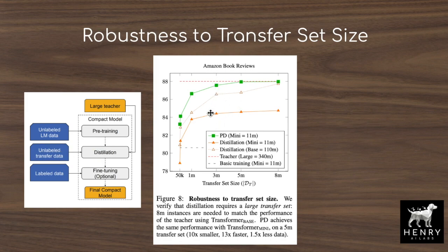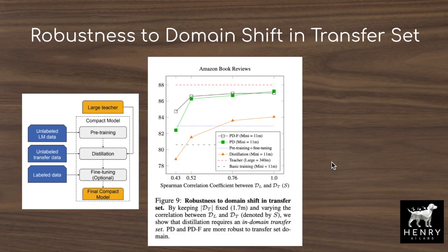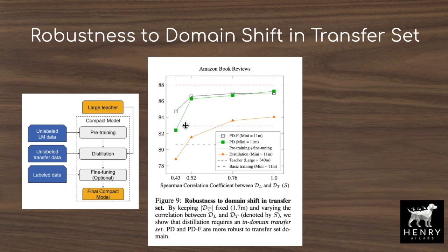Most importantly, pre-training the student performs much better than doing only distillation without seeding the model with its own masked language modeling. The next ablation shows how much better this algorithm is with respect to in-domain composition. To test this, they compare the 100 most frequently used words in the unlabeled and labeled data to construct subsets of the 8 million examples, sampling 1.7 million to control for domain correlation. The green squares — pre-training distillation then fine-tuning — perform much better than distillation-only with respect to in-domain composition.